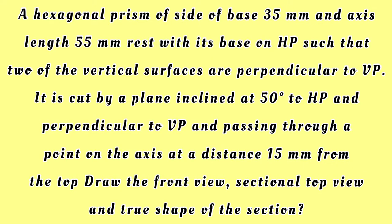Welcome students. We are discussing the section of solids topic. Problem one: a hexagonal prism with side of base 35 mm and axis length 55 mm rests with its base on HP such that two of the vertical surfaces are perpendicular to VP. It is cut by a plane inclined at 50 degrees to the HP and perpendicular to VP, passing through a point on the axis at a distance 15 mm from the top. Draw the front view, sectional top view, and true shape of the section.